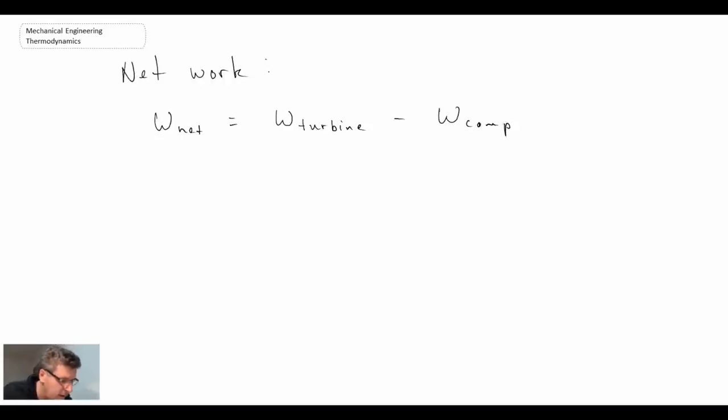Those are the two aspects that are doing the work. And there is another definition called the back work ratio. And that is just the work of the compressor divided by the work of the turbine. Now typically in a gas turbine engine it is going to vary depending upon the design, but typically about two-thirds of the turbine power goes into powering the compressor.